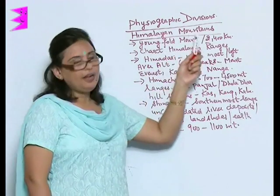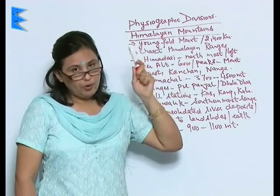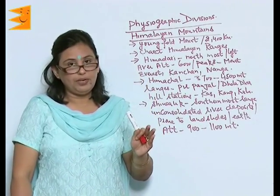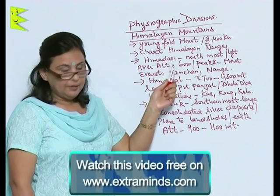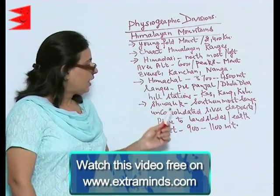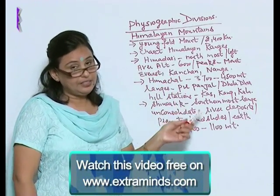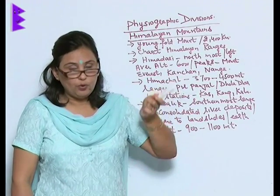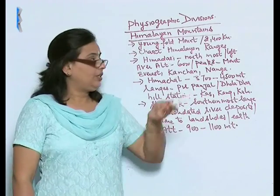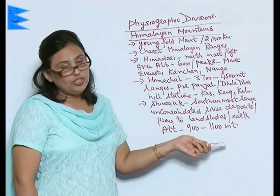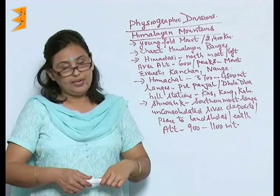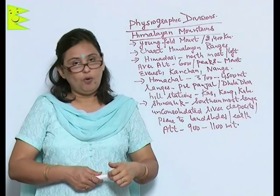So remember: the first physiographic division of India is the Himalayan mountains. The Himalayan mountains are young fold mountains and there are three ranges — the loftiest is the Himadri, Himachal has most of the hill stations, and Shivalik, because it is unconsolidated, is prone to landslides, earthquakes, and soil erosion. In the next clipping, I'll talk about the second division of India.